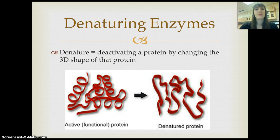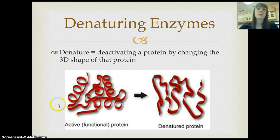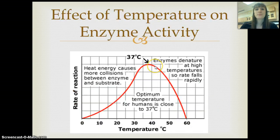If the 3D structure of proteins and enzymes is so important, then changing that 3D structure changes the ability of that enzyme to work — that's called denaturing. If you deactivate a protein by changing its 3D shape, we are denaturing it. Here's an image representing that: the active or functional protein has a very specific active site, while the denatured protein just has a different 3D structure. There are several different ways to denature proteins.